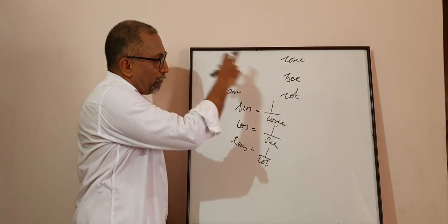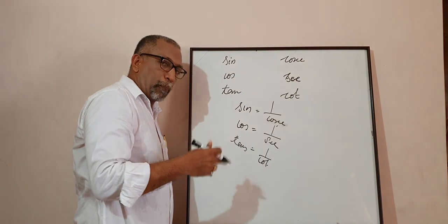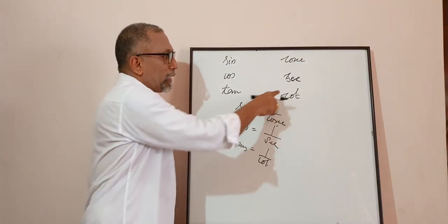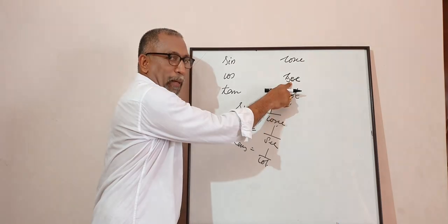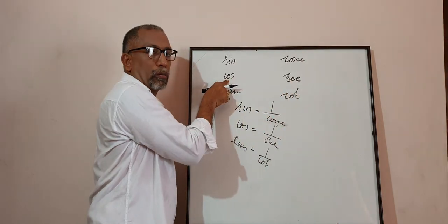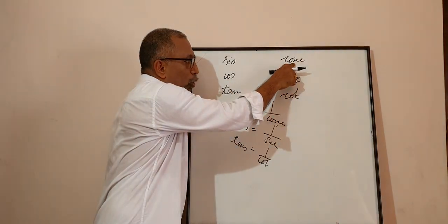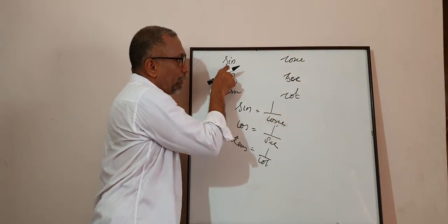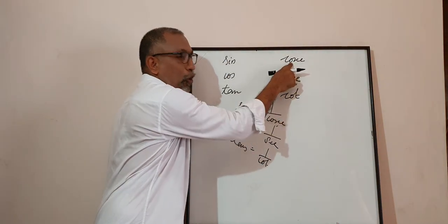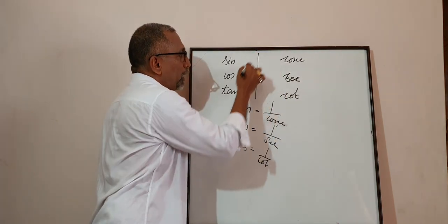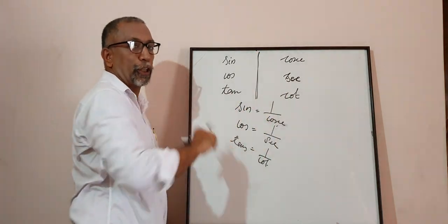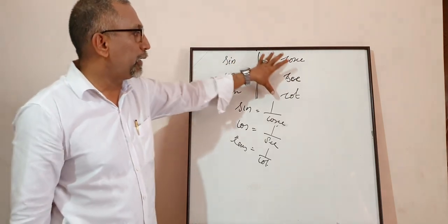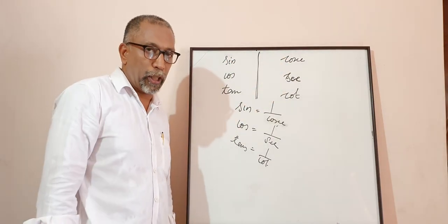These are actually very important things, because while doing the problem, this is required. You need to know: 1 by sin is cosec, 1 by cosec is sin, 1 by sin is cosec. So these are actually the inverse trigonometric ratios. These are the three basic fundamental trigonometric ratios, and these are the inverse trigonometric ratios.